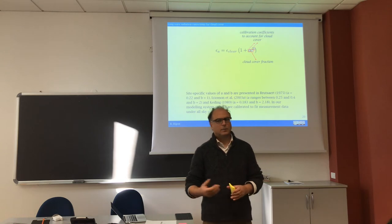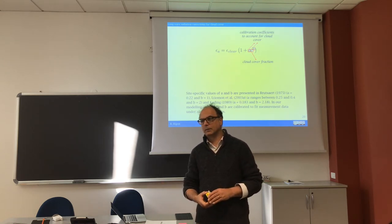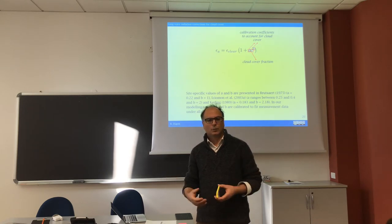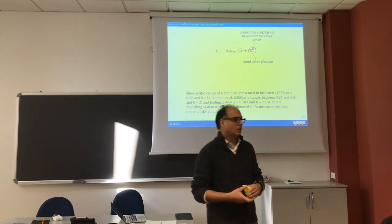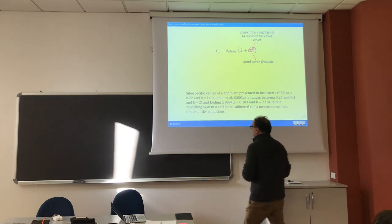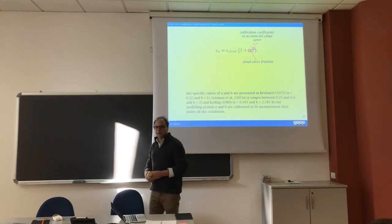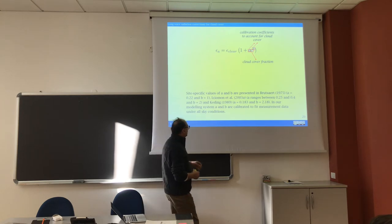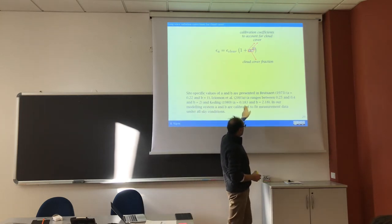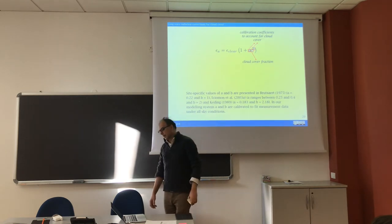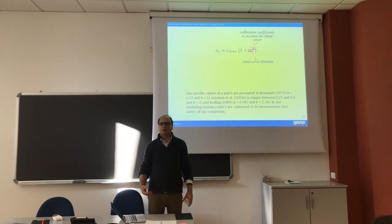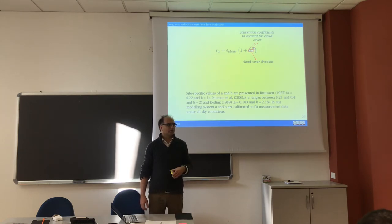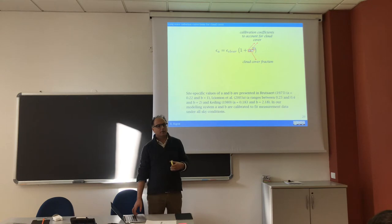Cloud cover is accounted for through a simple formula like one plus a·c·b, where c is the fraction of sky covered by clouds and a and b are two parameters that are usually calibrated. You can do much better on this topic, but that is the way we treat it in our model. Literature provides typical values for a and b, but if you are doing real measurements it is really crucial to calibrate your parameters for your specific case.